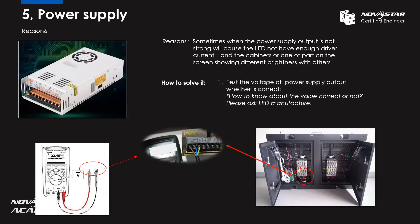The next reason is power supply. Maybe when you see this reason you think: how can power supply influence brightness? But actually, sometimes when the power supply output is not strong enough, it will cause the LED driver IC not to have enough drive current, and one cabinet or part of the screen will show different brightness. It does happen. Since this is a hardware problem, what we can do is test the voltage of the power supply output to see whether it is correct. Before you do the test, you need to know the standard operating voltage — please check with your manufacturer, because if they have a special cabinet design the standard operating voltage may be a little different. This part we can help with, but we cannot control.